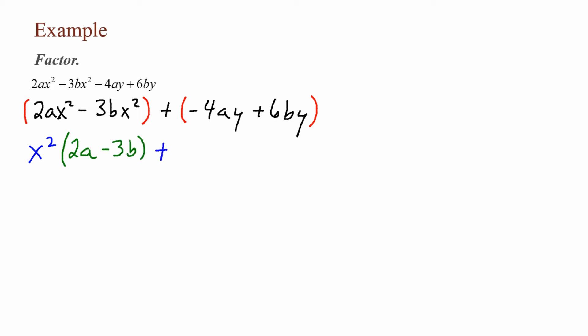Looking at my second group, negative 4ay plus 6by: anytime your leading term has a negative coefficient, you also want to factor out the negative. 4 and 6 are both even, so I'm going to factor out negative 2. They both have a y, so my GCF is negative 2y. Negative 4 divided by negative 2 is positive 2, and the y's cancel — so I have 2a. For 6by, 6 divided by negative 2 is negative 3b, and the y's cancel. So my greatest common factor is now (2a minus 3b).